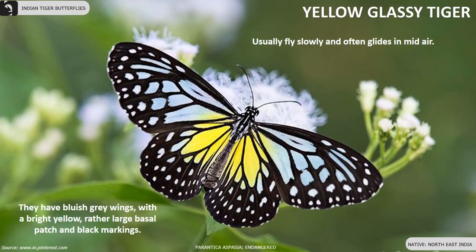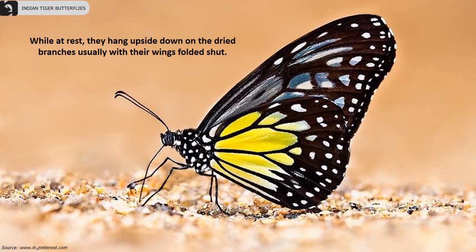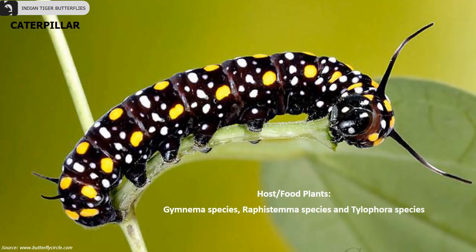Yellow Glassy Tiger is an endangered butterfly species found in the Northeast of India. They have bluish-grey wings with a bright yellow, rather large basal patch and black markings. They usually fly slowly and often glide in mid-air. While at rest, they hang upside down on dried branches, usually with their wings folded shut. Gymnema, Rafistema and Tylophora are some of their host plant species.